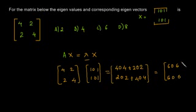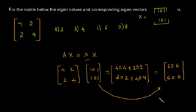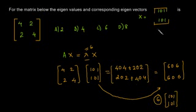It is obvious that we have a linear relationship between these two. That means it is 6 times [1, -1]. So lambda is 6. So the eigenvalue corresponding to this eigenvector is 6.